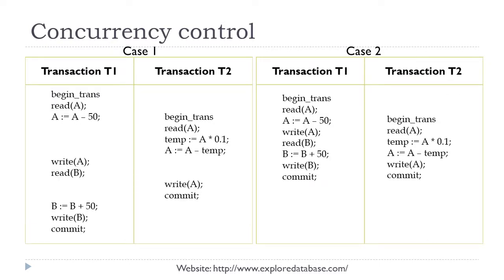But if we execute them in an interleaved fashion — for example, some instructions from T1, then some from T2, then again some from T1 — this is interleaved execution. In case 2, instructions from both transactions occur in the same timeline simultaneously. Both are considered interleaved execution, and when executed this way, there may be inconsistencies based on the read and write operations performed.